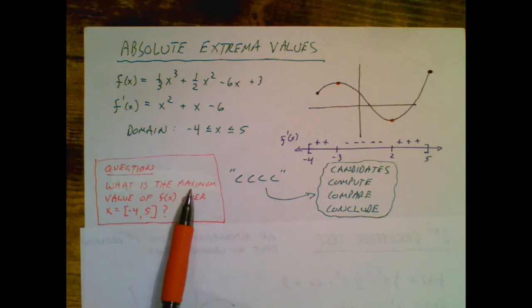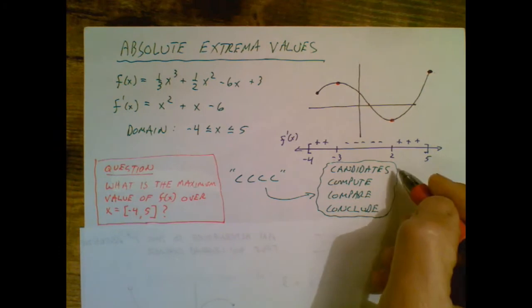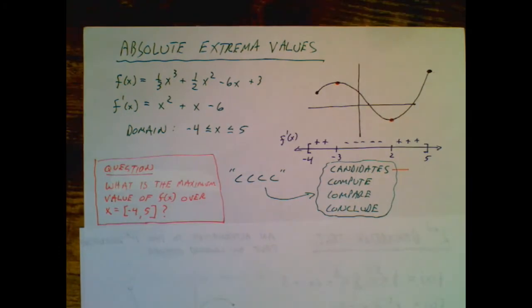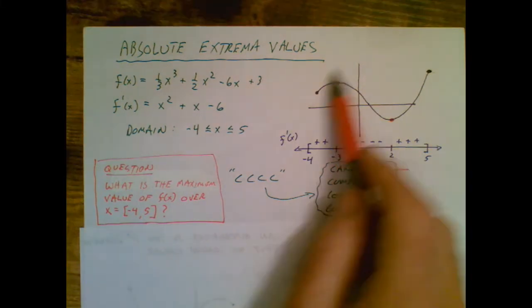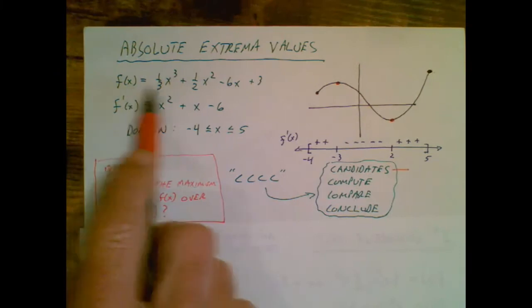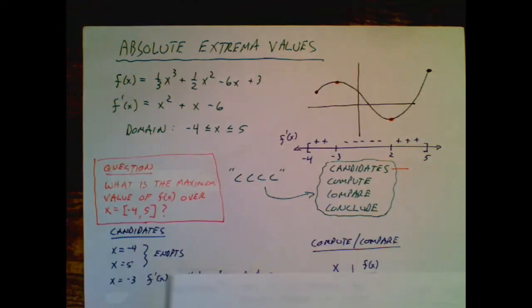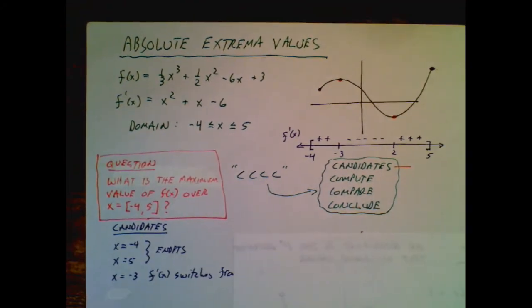I know I'm looking for the maximum value, so I need to, first of all, start off with, what are the candidates that might lead to the maximum value? Because remember, I wouldn't see this graph. I would only have this thing. So here's what I do for the candidates.